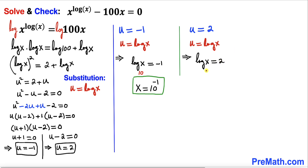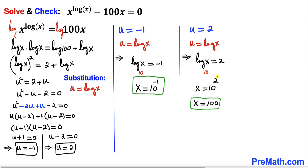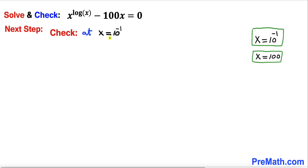For the second case, u equals 2, so log(x) equals 2. By default the base is 10, so converting to exponential form gives x equals 10 squared, which means x equals 100.